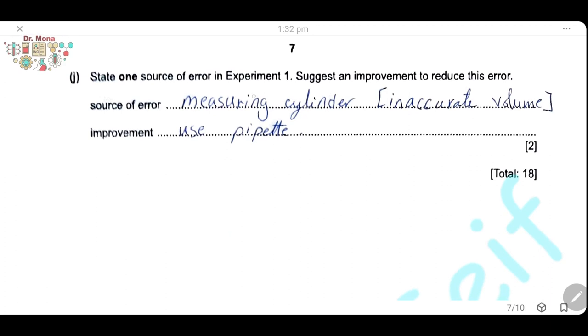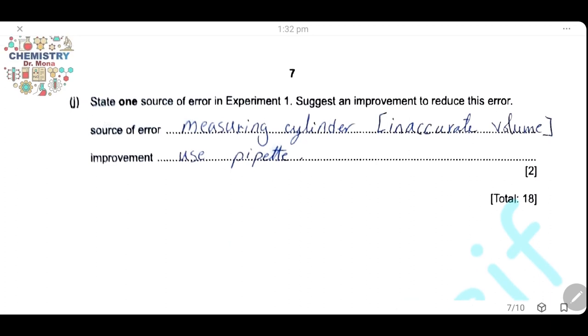State one source of error in experiment 1 and suggest an improvement to reduce this error. The source of error is using measuring cylinder, which is inaccurate, and we can use the pipette as improvement because it gives more accurate volume.